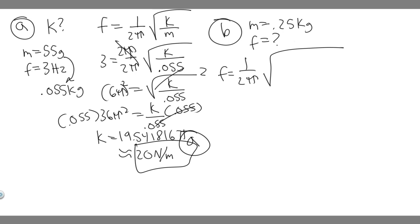k in this case is 19.54. I'm going to take a more exact value. k is 19.54 divided by the mass, which is 0.25. Go ahead and do this. You're just going to want to do square root of 19.54, divide that by 0.25, and then divide that by 2 pi. Make sure you divide the whole thing.